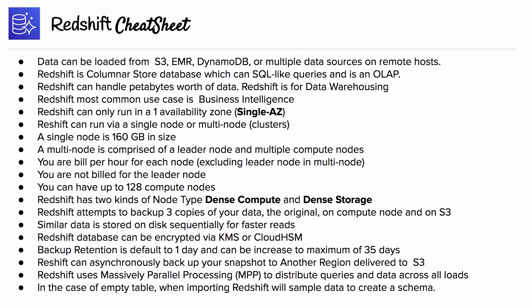Redshift can run via a single node or multi-node for clusters. A single node is 160 gigabytes in size. A multi-node is comprised of a leader node and multiple compute nodes. You are billed per hour for each node excluding the leader node in multi-node — you are not billed for the leader node. You can have up to 128 compute nodes.